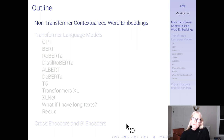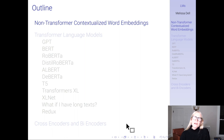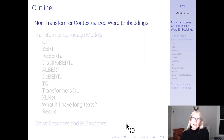Recall from last week, we talked about a model called Word2Vec. For a given model trained on a given corpus, the same word would always have the same embedding, regardless of the context it was used in. So if you looked up the embedding for the word 'bank,' there would be just one embedding from a given training corpus, even though 'bank' can have very different meanings depending on the context.